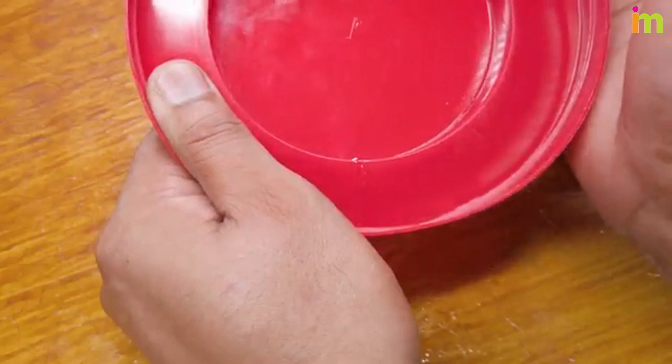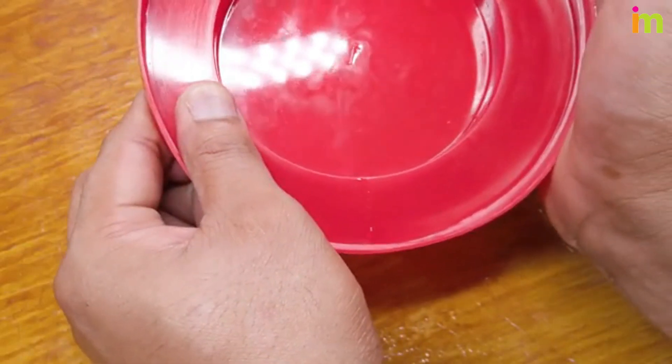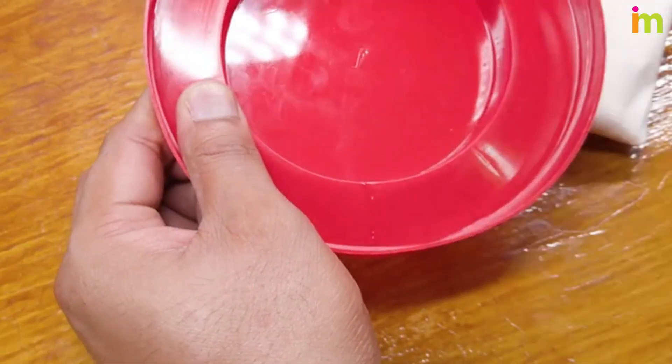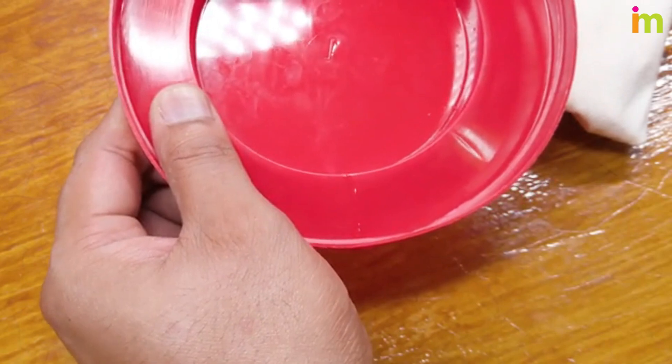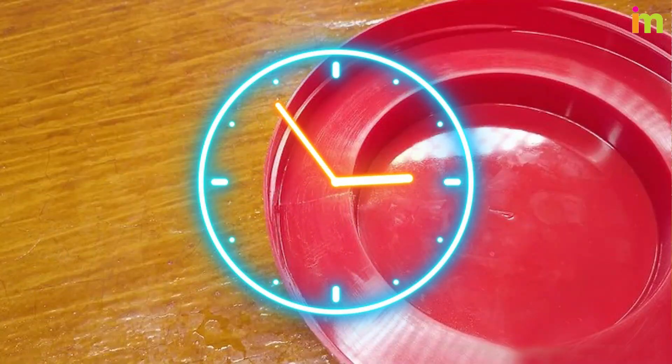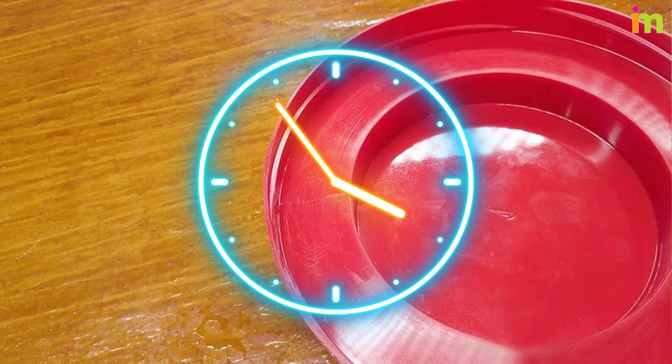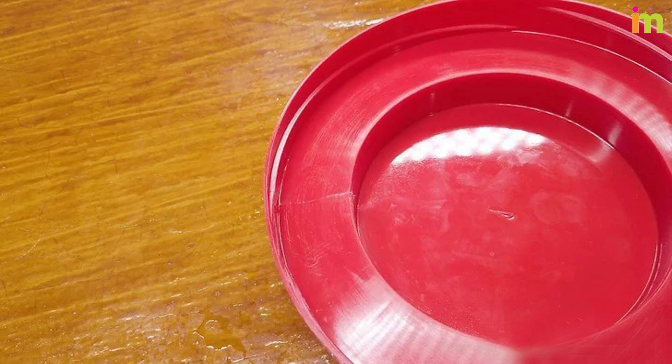With the glue spread on the edges, push them together to connect them. Line up the edges carefully. Once you've connected the cracks in the plastic, it's very important that you let the glue fully set before using the plastic.